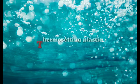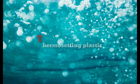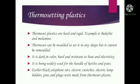Thermoset plastics are hard and rigid. Examples are Bakelite and melamine. Thermoset can be molded to set in its shape but it cannot be remolded. It is dark in color, hard and resistant to heat and electricity.